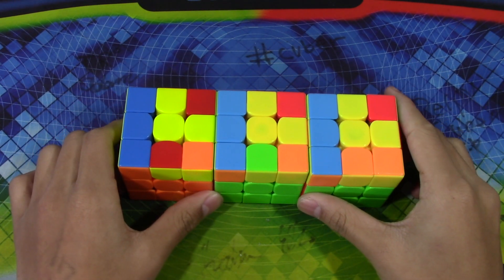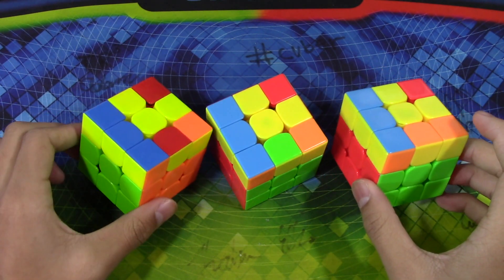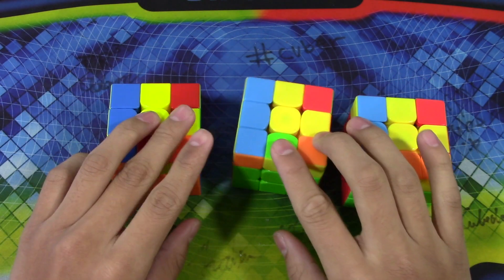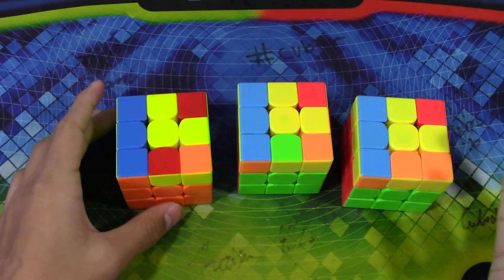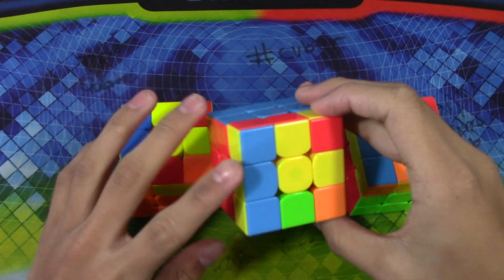I'll be going over these three one look last layer cases today. As you see, they are all of this OLL and they all have, if you can recognize CP which you should before knowing this, they all are diag swaps.